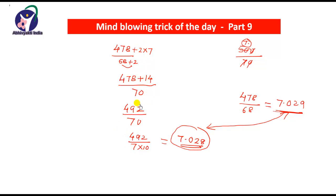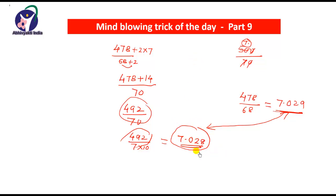So we can quickly find this. There is no need to write out all the intermediate steps. Directly you get 492 by 70 — just divide by 7 and put a decimal point after one digit, and you get the answer as 7.028. Is it not simple? Yes, it is simple — just some addition and a simple division.